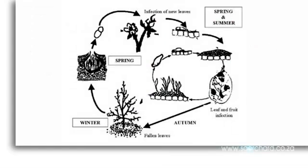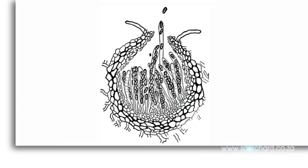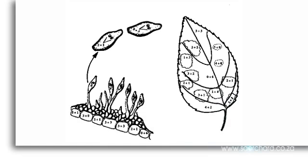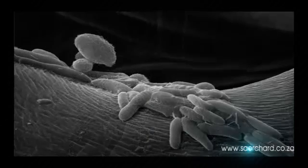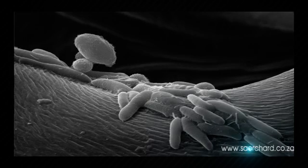Apple scab attacks the tree in the spring. It needs wet conditions combined with the right temperatures to release the spores that float through the air and land on the plant. Those that land on fruit or leaves will embed into the surface and begin to grow.